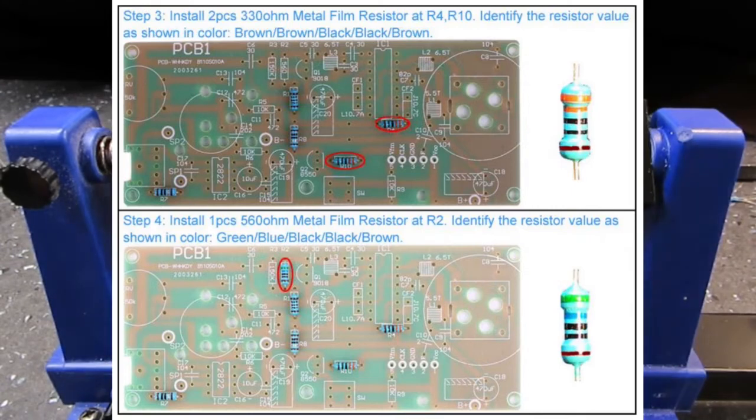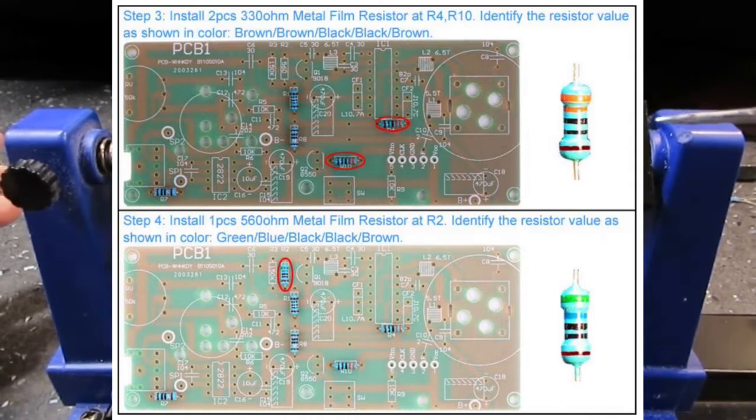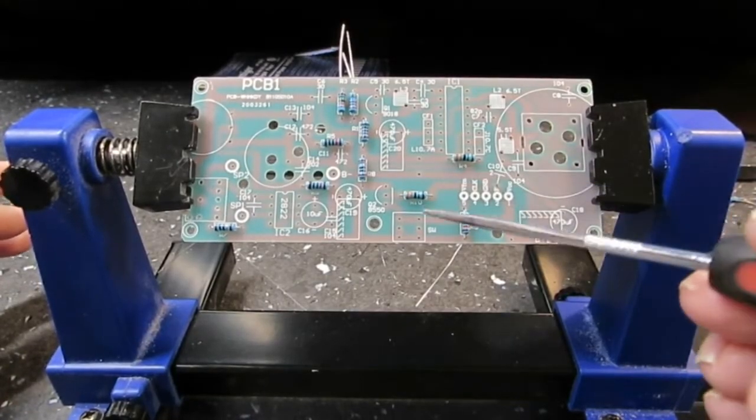Now, I believe there was a couple of 330 something. If you look at step 3 again, you can see in the color code, again, this is a bad translation problem or what. But you can clearly see the color on the resistor is orange, orange, black, black, brown. And that's very clear. Now they've got it listed as brown, brown, black, black, brown. That's obviously not.